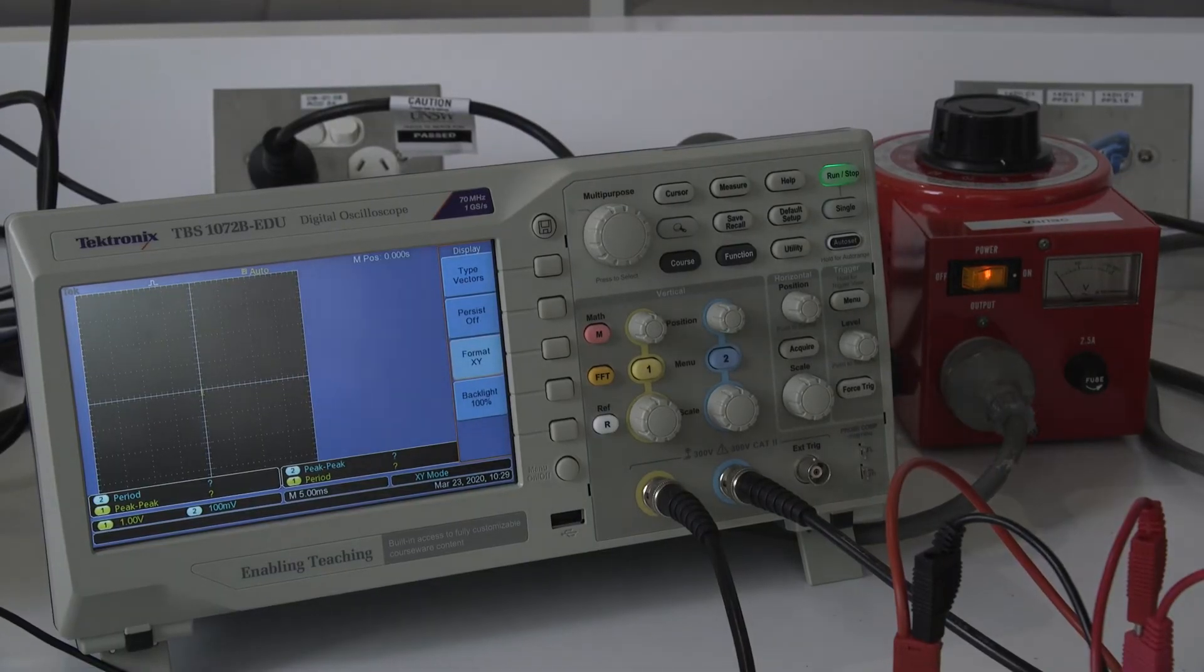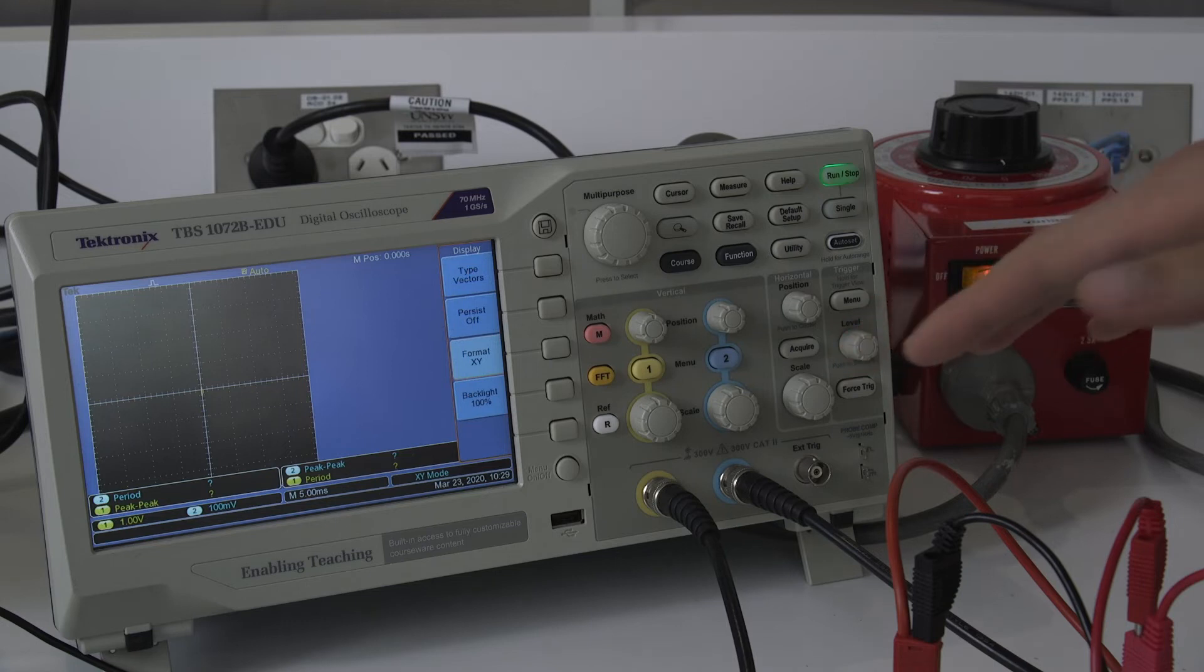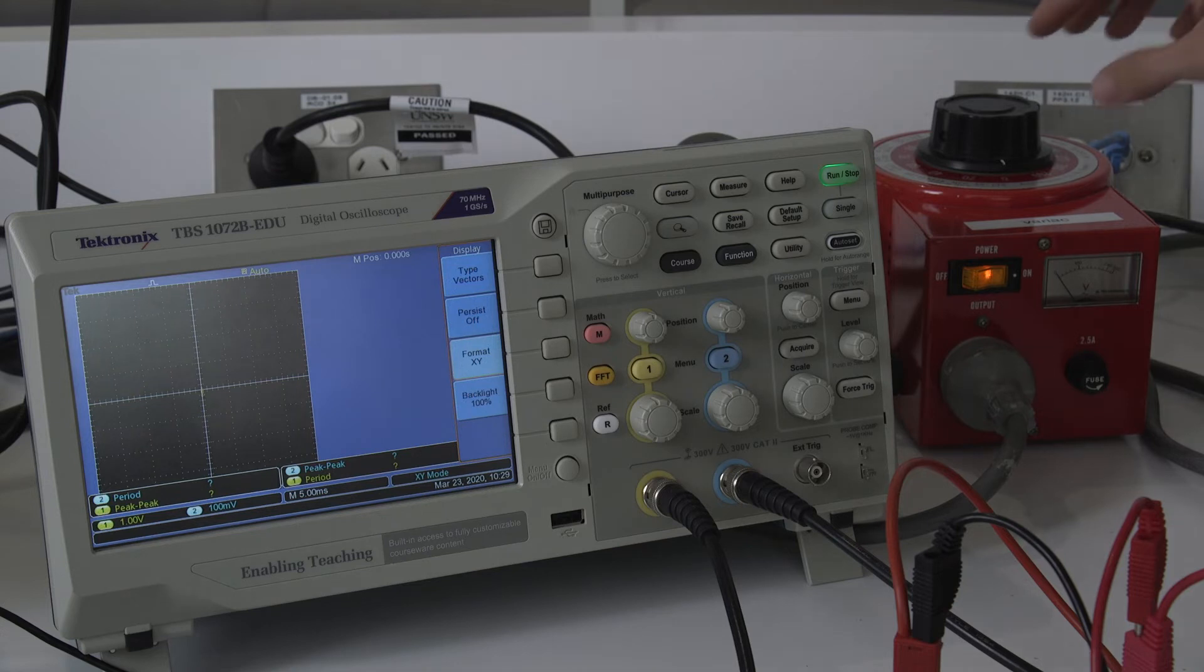Now we're looking at the output of the oscilloscope, which is what the actual measurement is going to be in your experiment. You can see here there's not much being shown at the moment because there's no voltage being applied, so there's no current in the primary coil.